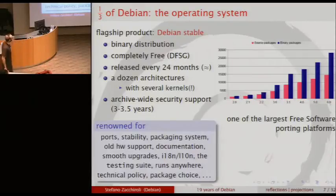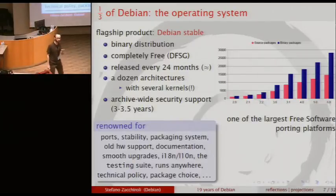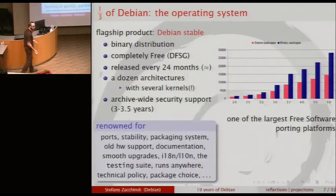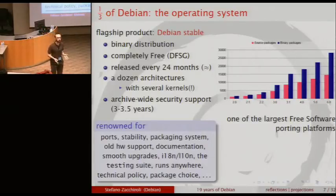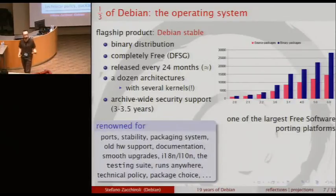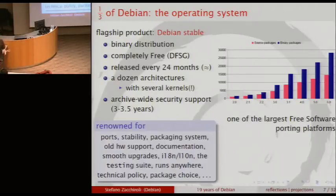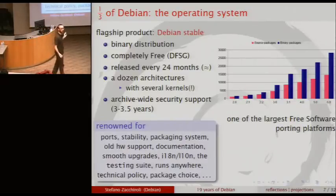The main product we produce is what we call Debian Stable — a distribution meant to be installed on machines that want to stay stable for a while, ideally three to four years. It's not for the bleeding edge market. If you want the latest software, you won't find it in Debian Stable. But if you want a desktop or server machine that is stable and stays stable, you will find it there.